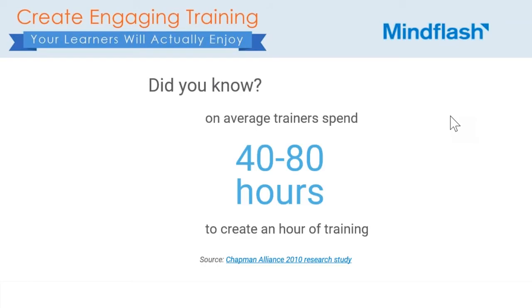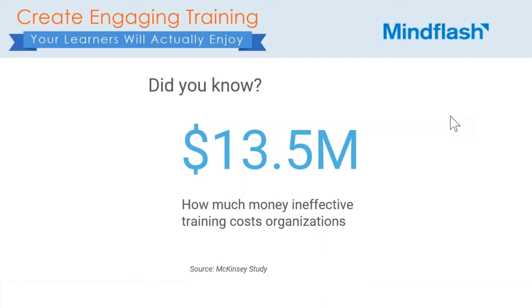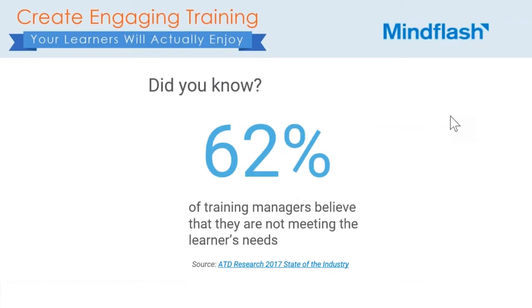Did you know that on average, trainers spend between 40 and 80 hours to create a half hour of training? Also, we might be wasting about $3.5 million on an annual basis for ineffective training, and 62% of training managers think they're not meeting their learners' needs.